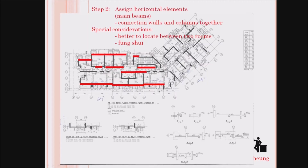You can see another example — after you provide the core wall, you connect the core walls together with main beams. This is the so-called horizontal element to make the structural framing stronger and good enough to resist wind load. After doing the x-direction, you also do the y-direction — just connect two walls together to make a strong framing plan.